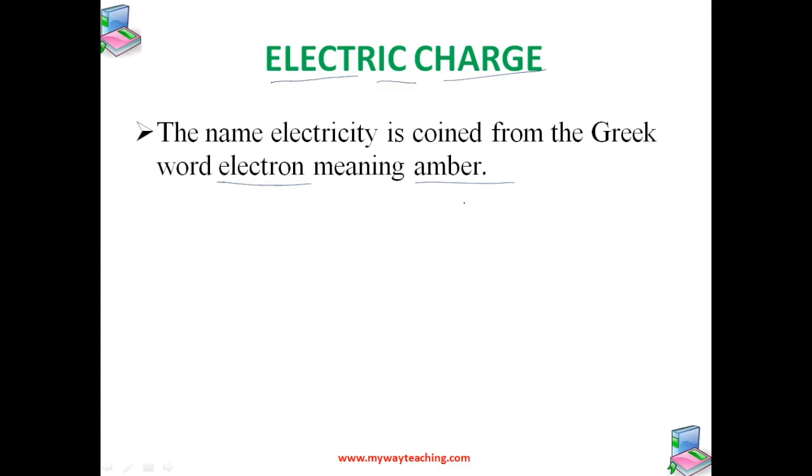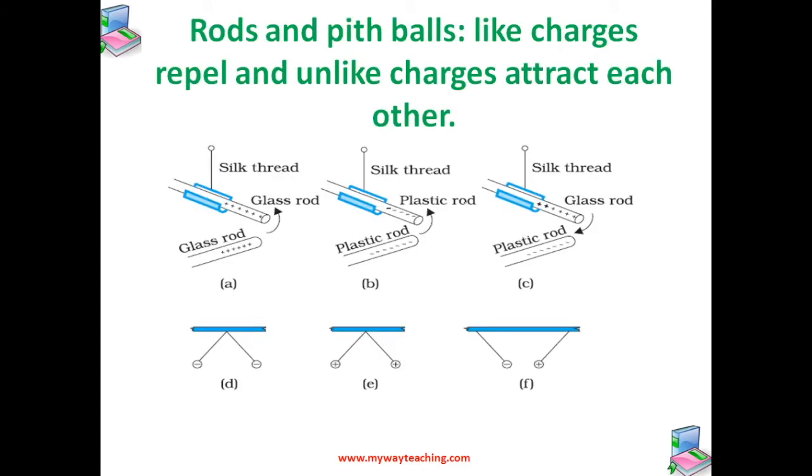It was also observed that if two glass rods are rubbed with wool or silk cloth and are brought close to each other, then they repel each other. You can see in figure A, the two strands of wool or two pieces of silk cloth with which the rods were rubbed. With pieces of silk thread, you can see these rods are rubbed. So after rubbing, when we bring these two rods, they repel each other.